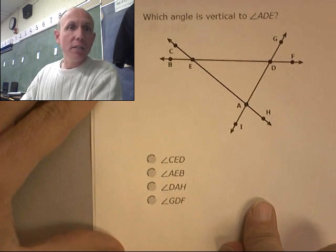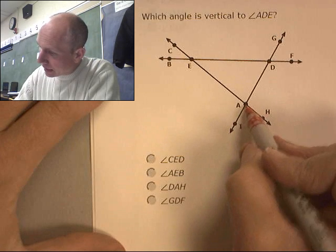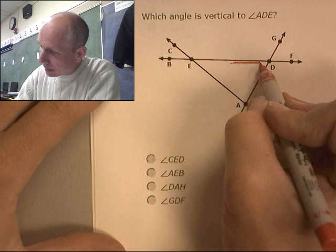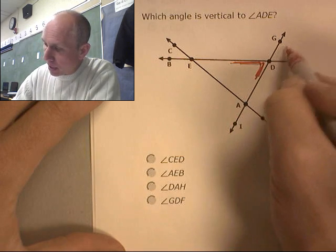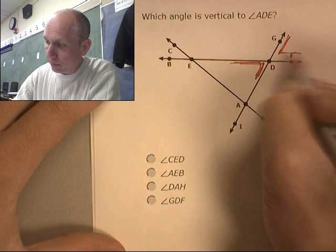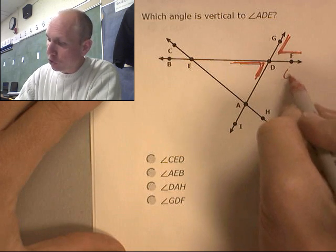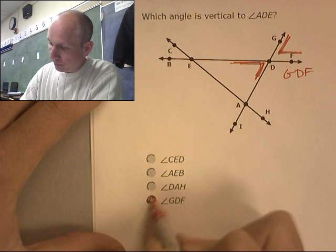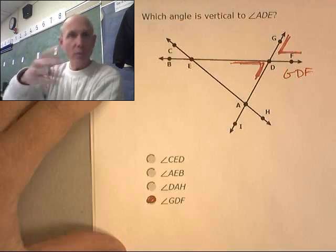Which angle is vertical to ADE? ADE. Who is vertical to this? This guy right here. Here's his vertical angle. His vertical is GDF. GDF right there. Or FDG. Remember, you can switch them around.